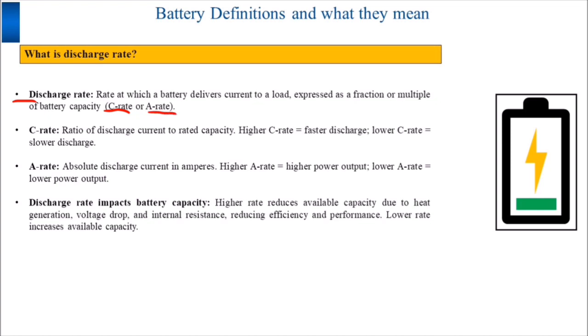As we already discussed about the C rate, a C rate is the ratio of discharge current to the rated capacity of the battery.